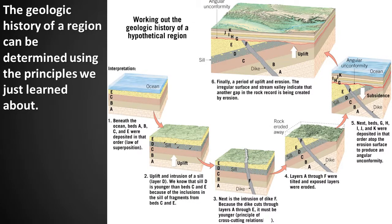The principles we just reviewed are superposition, cross-cutting relations, original horizontality, lateral continuity, and three different types of unconformities: angular unconformity, disconformity, and nonconformity. Based on these principles, we can interpret the geologic history of a region. You are now an expert in these relative age principles, so we will now discuss absolute age principles.